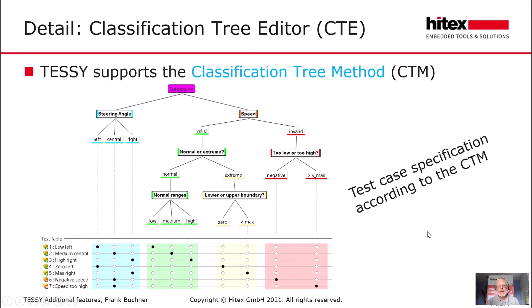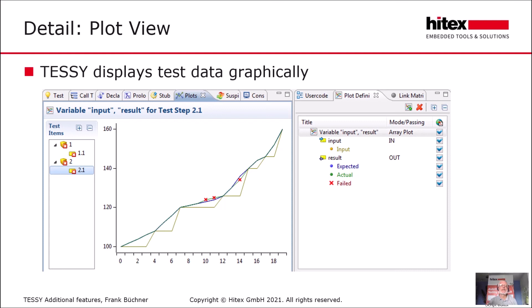TESI can also display test data graphically. We see here a display of 20 test cases. The input value is the beige step curve — the task of the test object was to smooth this step curve. Expected values are in blue and actual values are in green. For most test cases actual and expected are the same, with only slight differences in three cases. This is easier to spot and analyze in a graphical representation than in Excel sheets.